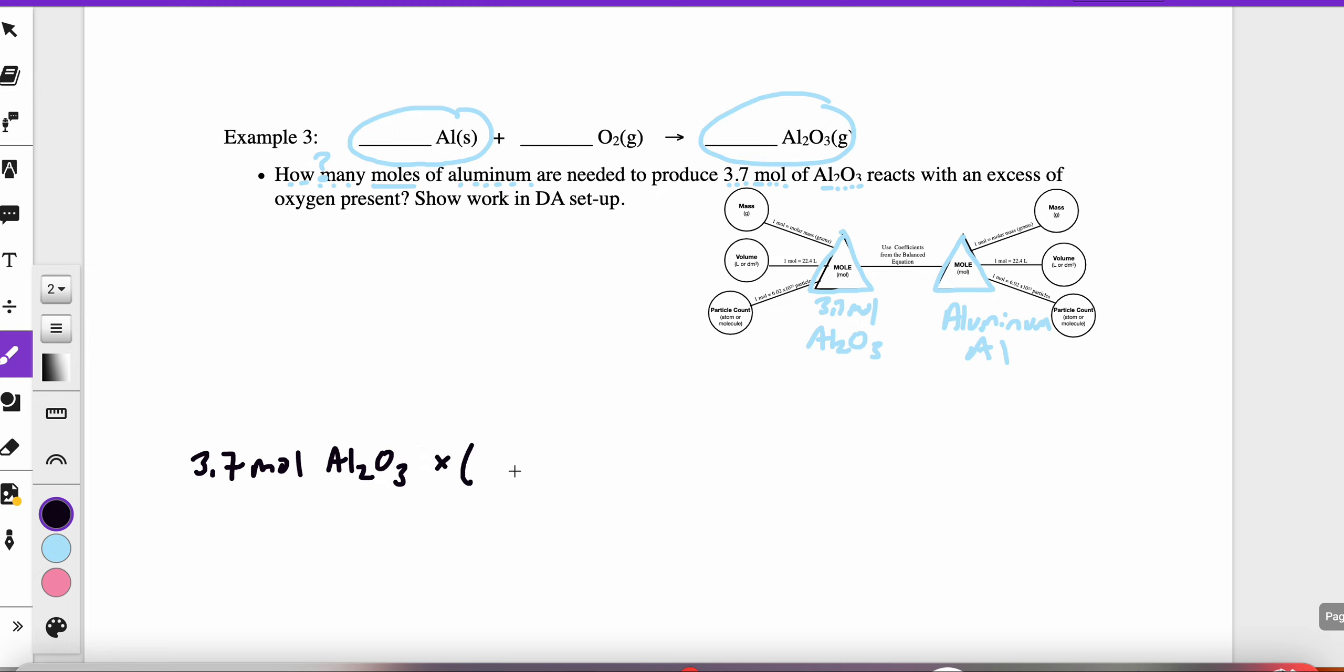I want to go, I want to be able to cross off moles of Al2O3. And I want to end up at moles of aluminum. So now that I have moles of Al, moles of aluminum oxide in a numerator and down below, they reduce to 1. And I'm left with this labeling of moles of aluminum.